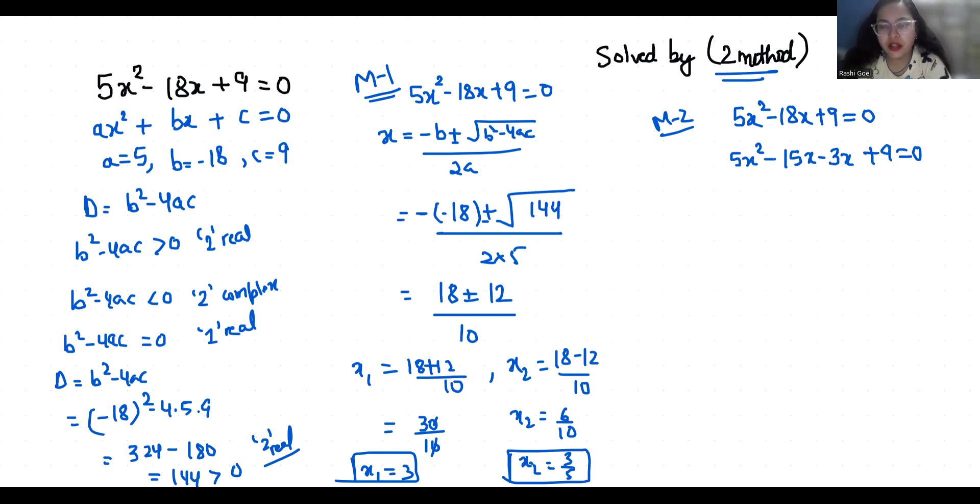From first two terms if I will take 5x common, and from last two if I will take -3 as common, x-3 equals to 0. x-3 is common.